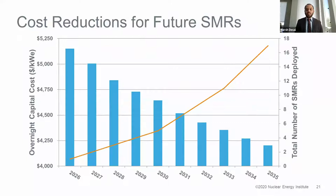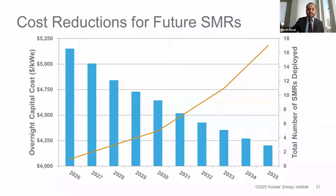The overnight capital cost — the cost of building a nuclear reactor in dollars per kilowatt electric — decreases significantly the more SMRs we build. As you start building up to 10, 12, or 16 reactors, you start seeing significant drops in cost of electricity. The more we deploy SMRs, the lower the cost of each next unit would be.